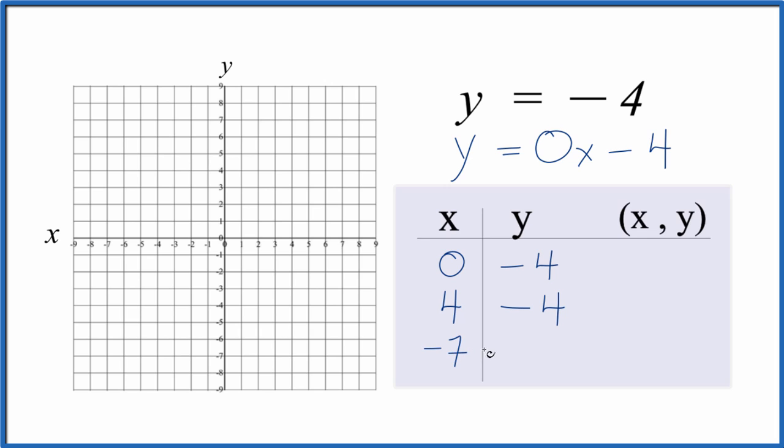Let's put negative 7 in. y equals, so negative 7 times 0. That's 0. We end up with y is negative 4. So these are the points that we'll graph for this linear equation y equals negative 4.